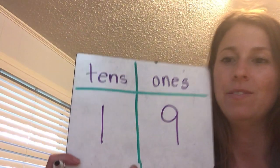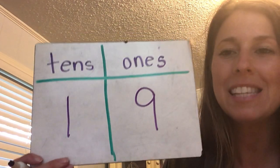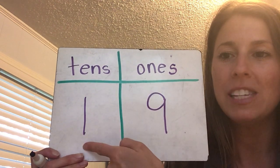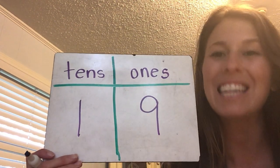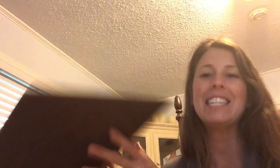Erase. My next number has one ten and nine ones. What number is that? One group of ten and nine ones is nineteen. Yes, nineteen — not ninety. They sound alike: nineteen.